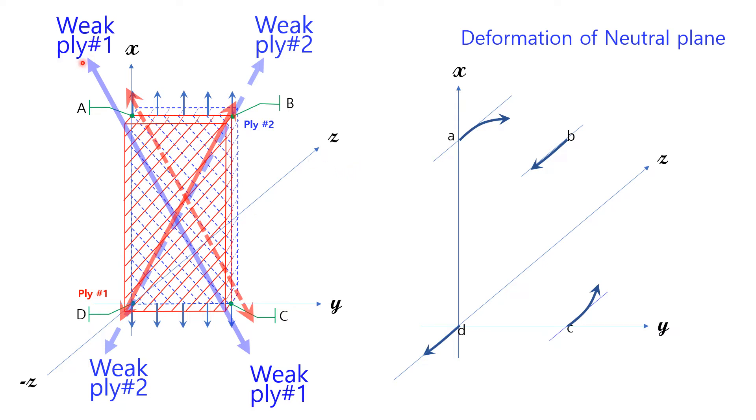The weak line of Ply 1 should be longer than the strong line of Ply 2 under the tension. They had the same length before being loaded. Therefore, point A and point C here are getting into the screen to the plus-Z axis. On the other hand, the weak line of Ply 2 should be longer than the strong line of Ply 1. They had the same length before being loaded. Therefore, point B and point D are popping out of the screen to the minus-Z axis.